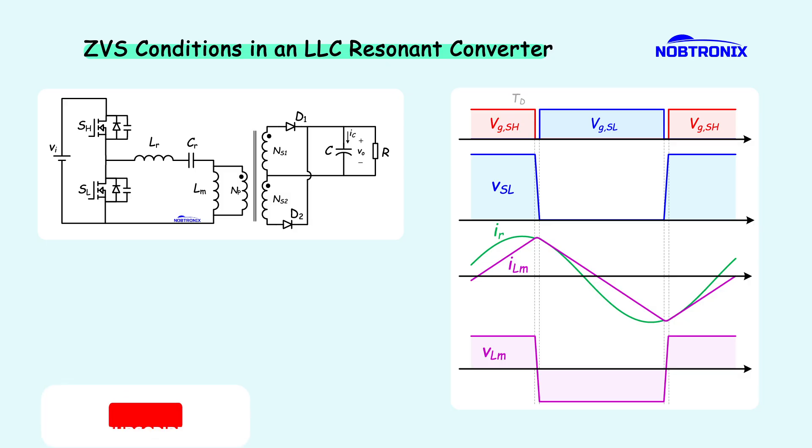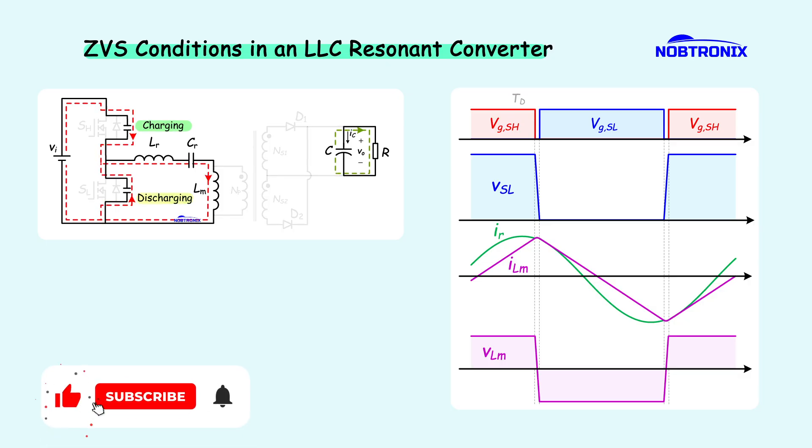The resonant tank, that's the resonant inductor and the resonant capacitor, is what charge and discharge the output capacitor of the MOSFETs. Now, because the switches are running at a 50% duty cycle, the transformer's magnetizing inductor current doesn't have a DC offset. That means its positive and negative peak value are equal.